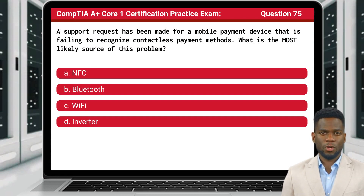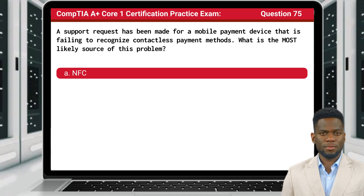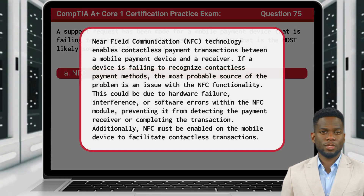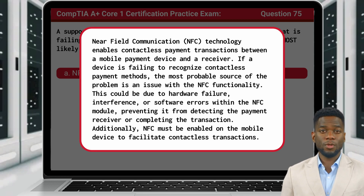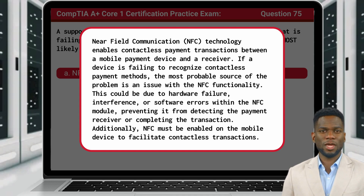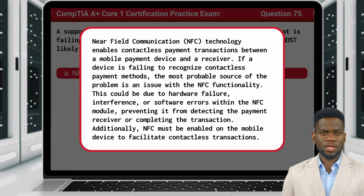Question 75. A support request has been made for a mobile payment device that is failing to recognize contactless payment methods. What is the most likely source of this problem? The answer is A: NFC. Near-field communication technology enables contactless payment transactions between a mobile payment device and a receiver. If a device is failing to recognize contactless payment methods, the most probable source of the problem is an issue with the NFC functionality. This could be due to hardware failure, interference, or software errors within the NFC module, preventing it from detecting the payment receiver or completing the transaction. Additionally, NFC must be enabled on the mobile device to facilitate contactless transactions.